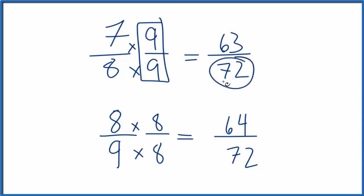Now we have the same denominator, and because of that, we can compare the numerator. We can see 64 is larger than 63. So this 8 ninths, the fraction 8 ninths, that's bigger than 7 eighths. Not a lot, only 1 seventy-second, but it's still bigger.